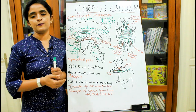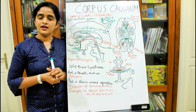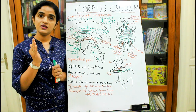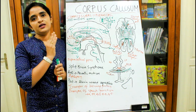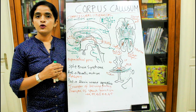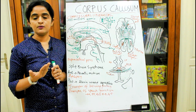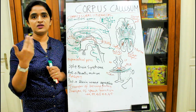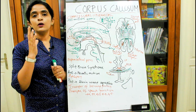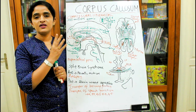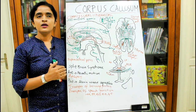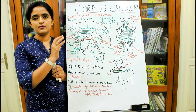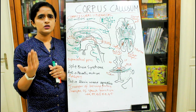The next important function of the corpus callosum is the transfer of speech function. If you are a right-handed person, your dominant hemisphere will be the left cerebral hemisphere. The speech areas — Broca's speech area, areas 44 and 45, and Wernicke's speech areas 22, 39, and 40 — all these areas are found in the dominant hemisphere.